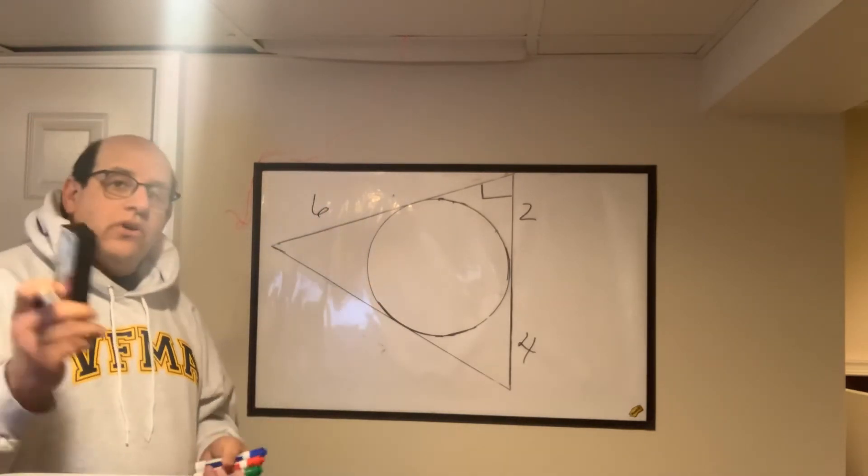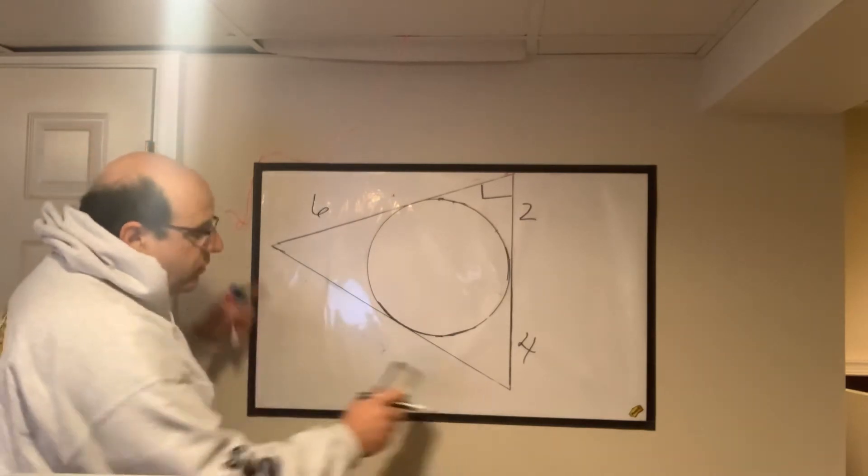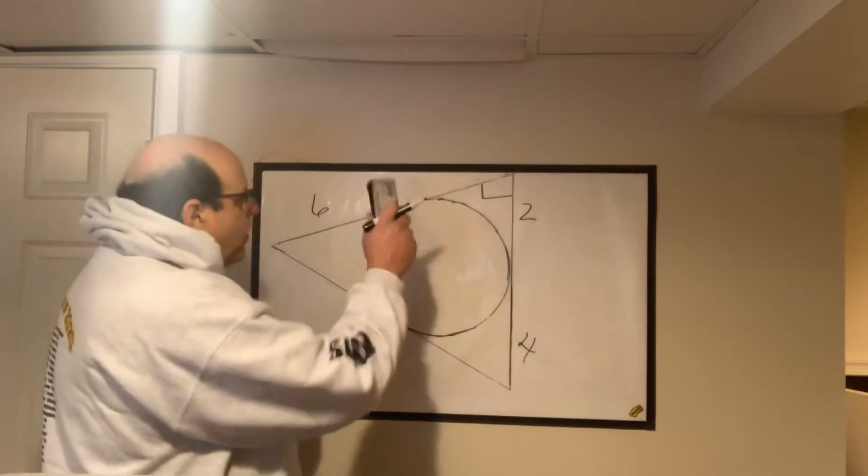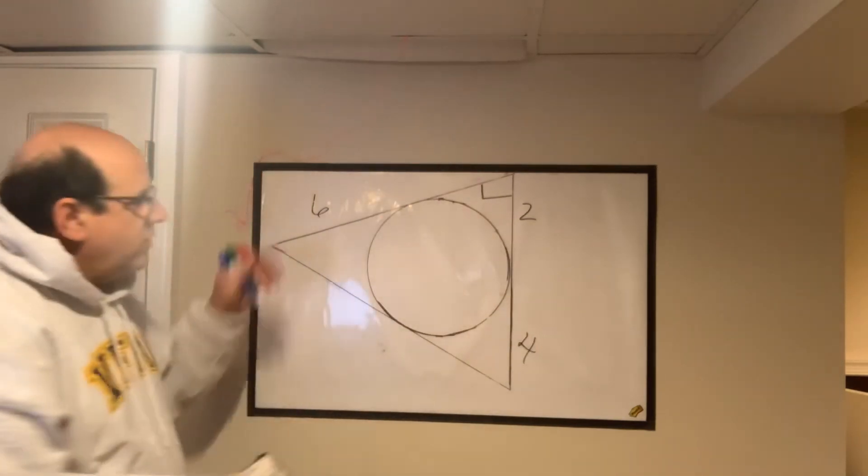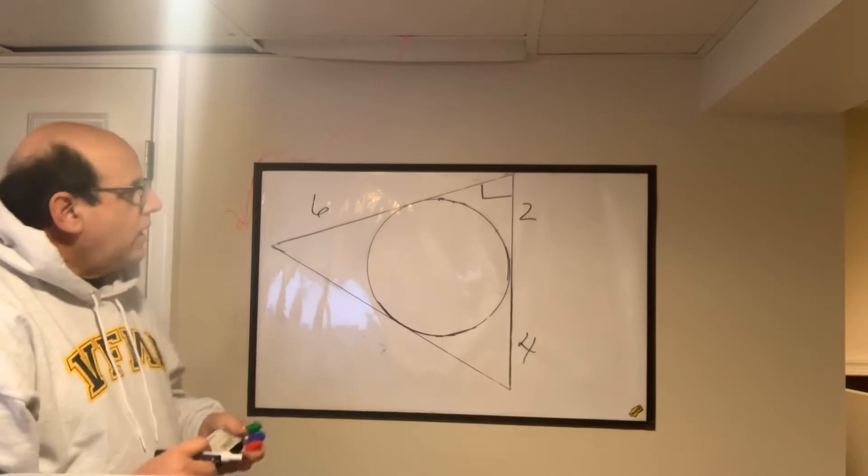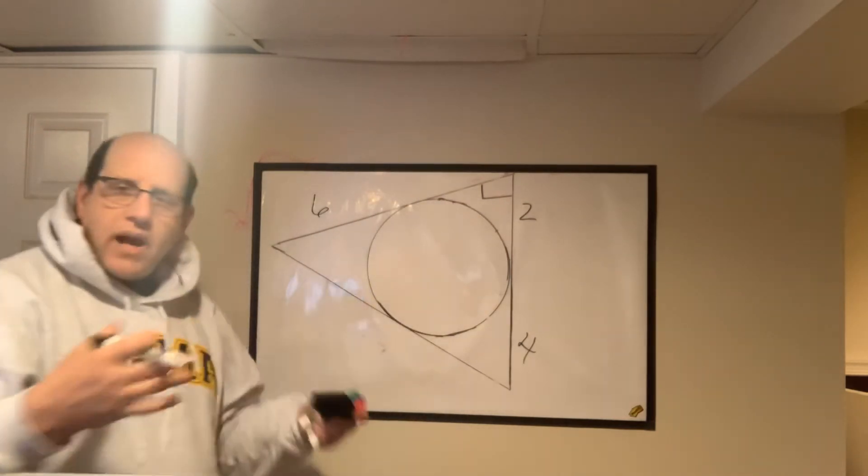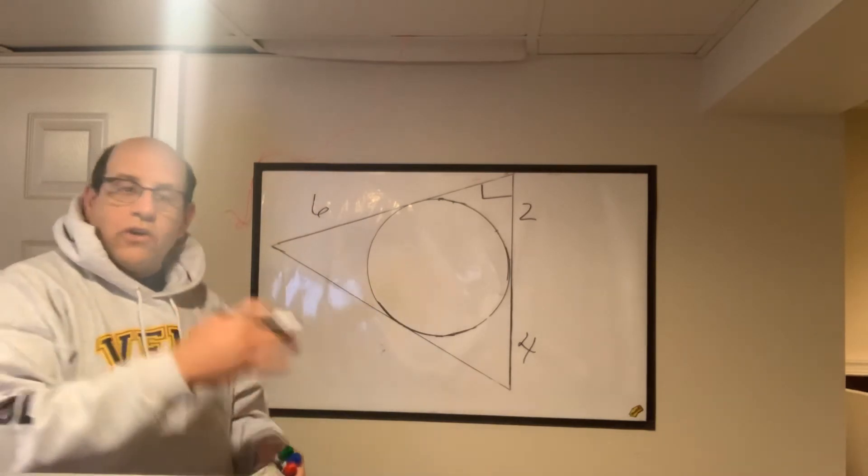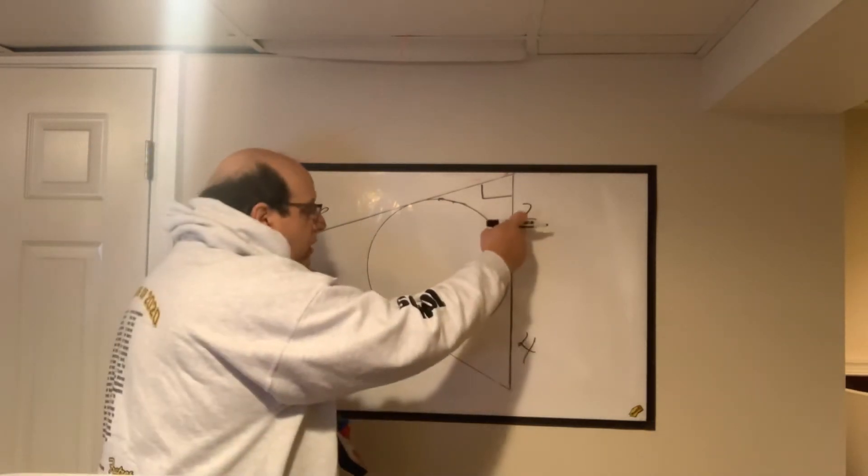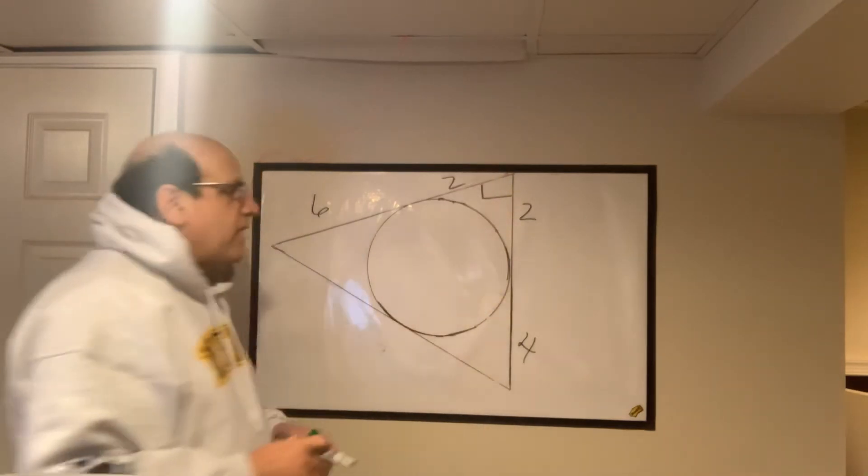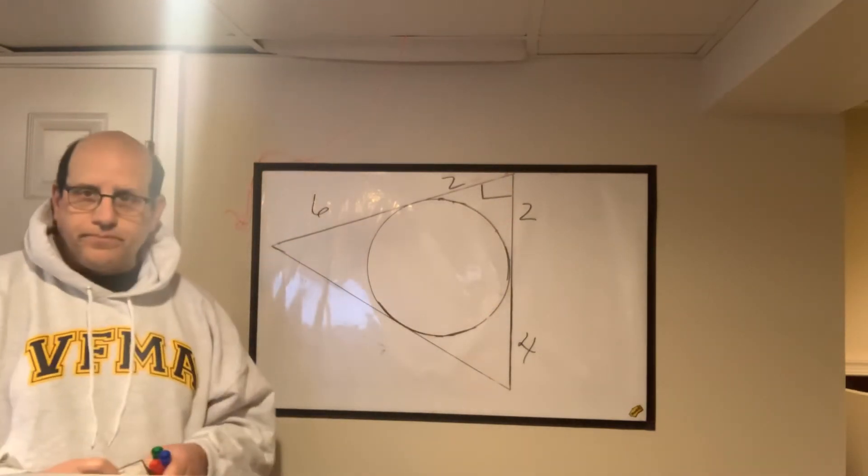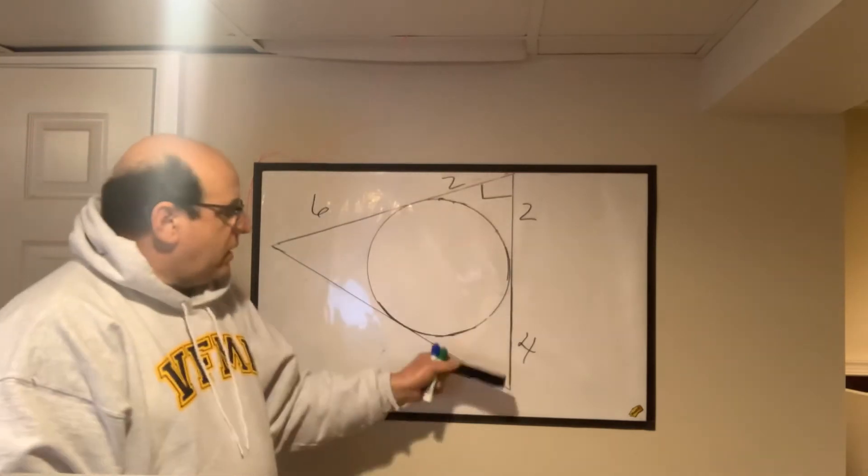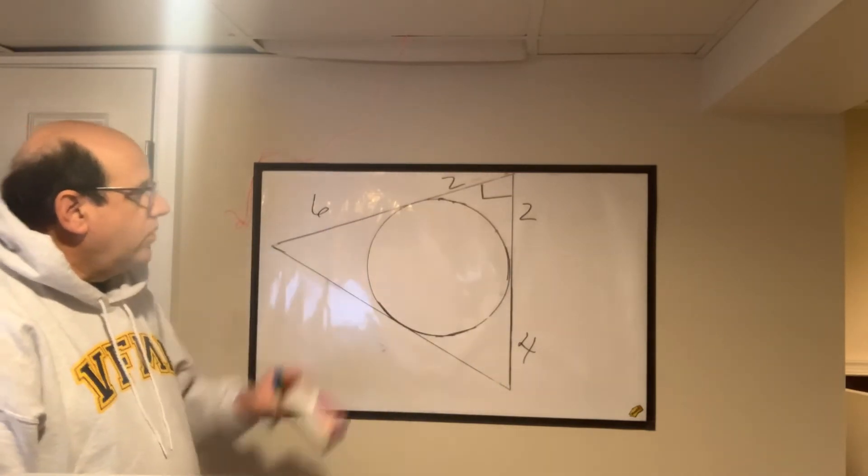Now, the good news about this is we're looking for the hypotenuse. And we've been given all the information that we need. Now, you'd say to yourself, well, Mr. Sokol, I don't have that segment there, but you actually do, because you've been given its congruent segment on the other side. So you would first label that as 2. Okay? And now you have 8 and 6, and those are our two legs.